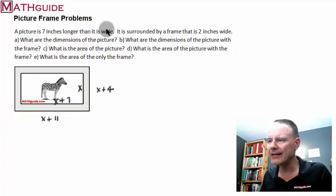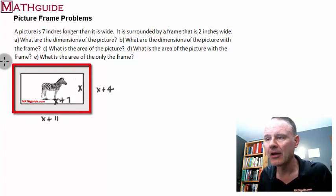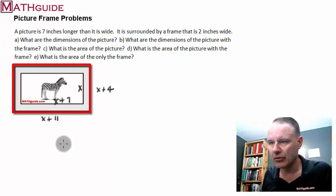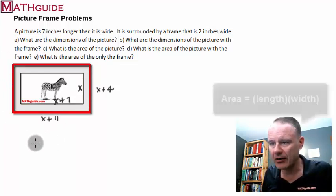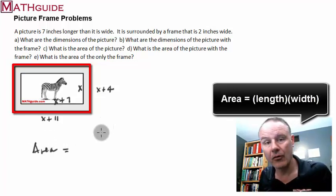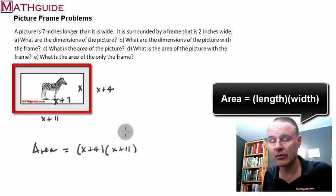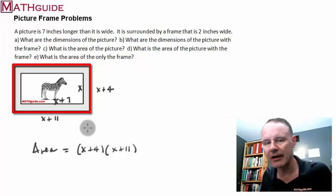Part D says, what is the area of the picture with the frame? In other words, this whole area, the whole thing. If you want the area, again, area of a rectangle is length times width. And it doesn't matter which order you multiply. I always like to put the smaller guy first, but it doesn't matter. So you could leave your answer like this, length times width.